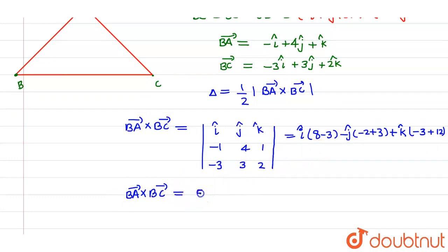Now, 8 minus 3 is 5, so this is 5i cap, minus 2 plus 3 is 1, so this will be minus j cap. And at last, minus 3 plus 12 can be written as 9, so this is 9k cap.